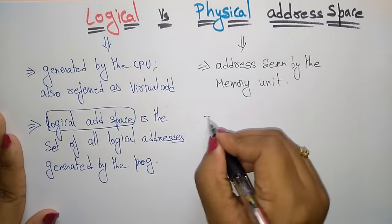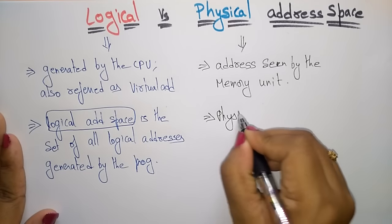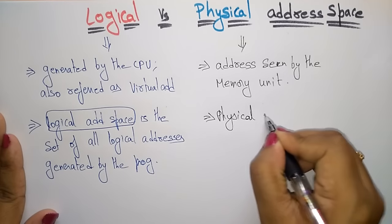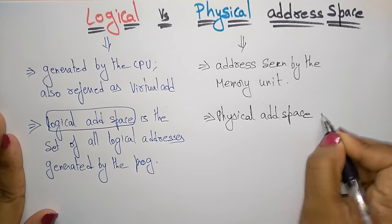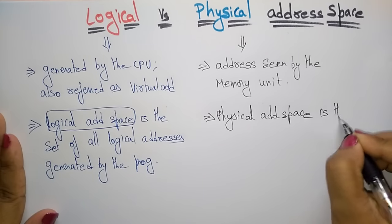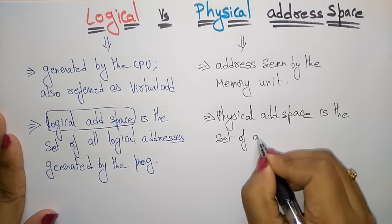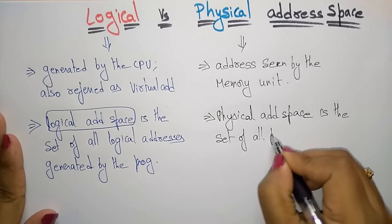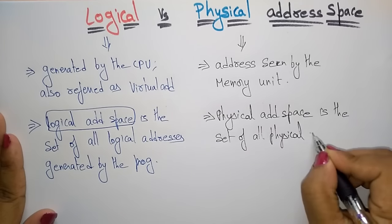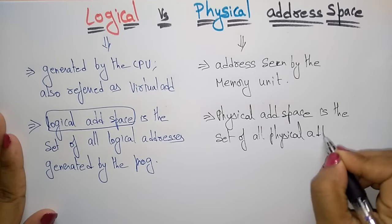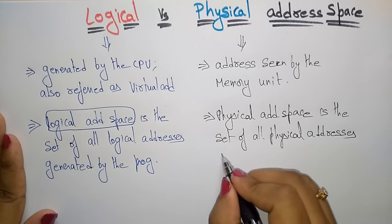In the same way, the physical address space is a set of all physical addresses — it consists of all physical addresses generated by the program.